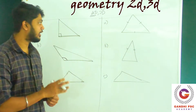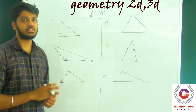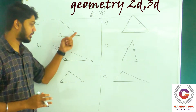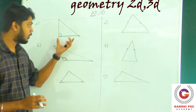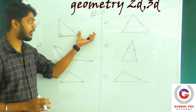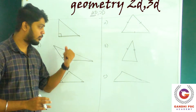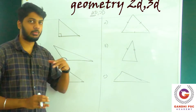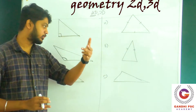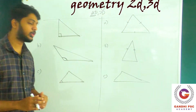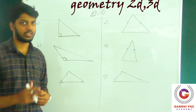The triangle angle basics: the right triangle, the obtuse triangle, and the acute triangle.